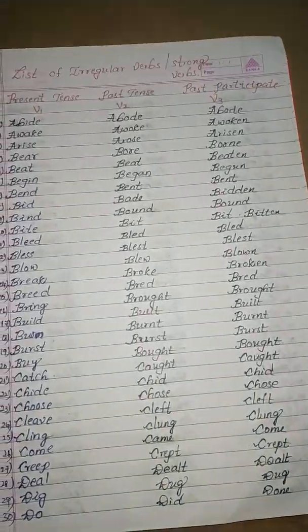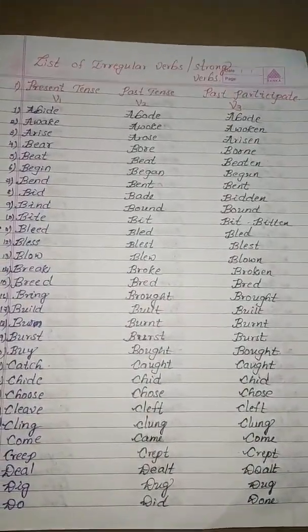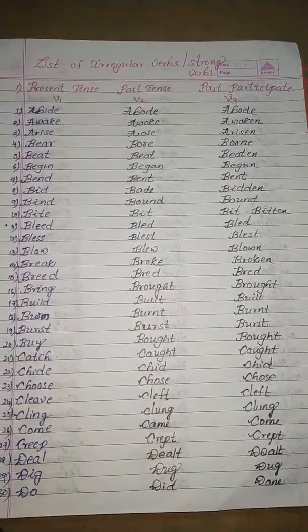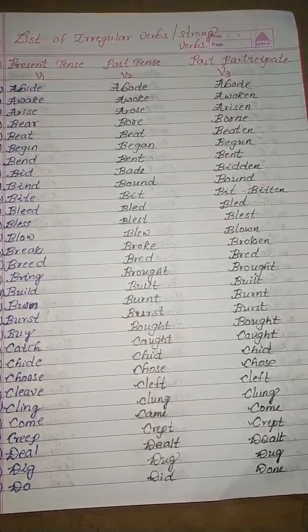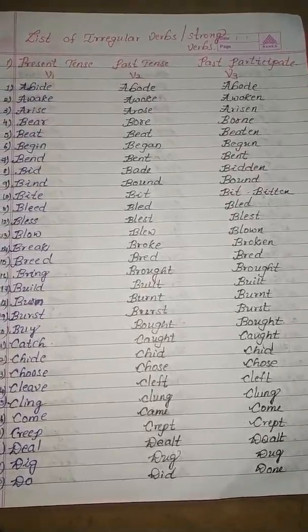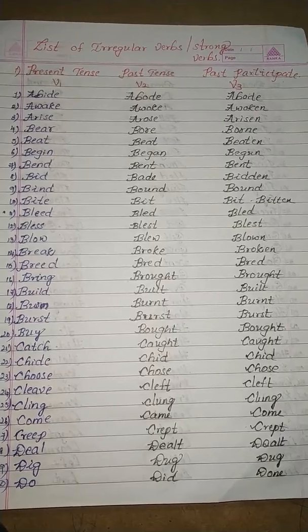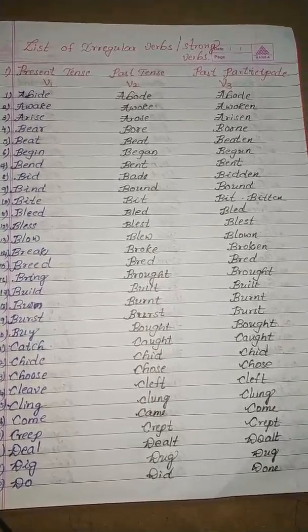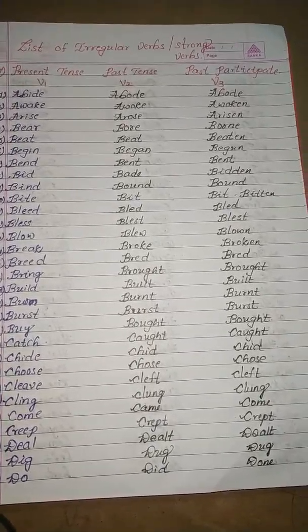And next, the list of irregular verbs — V1, V2, and V3. For example: write, wrote, written. These three belong to the same verb but the forms are different. We use these in different tenses.